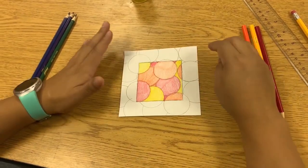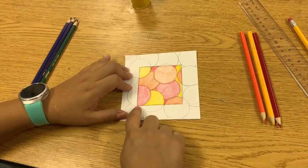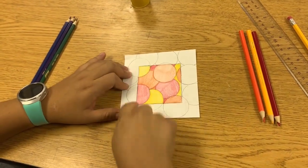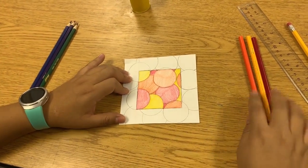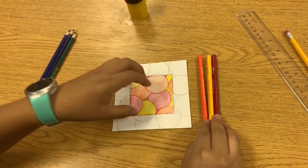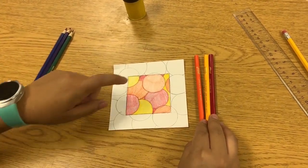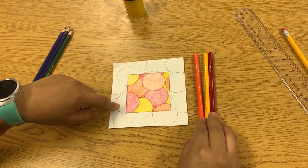So now that I'm done with my warm colors, you'll see that I did not ever go outside of my square using my warm colors. I still colored in the parts of the circles that were cut off, but I never went past that square.